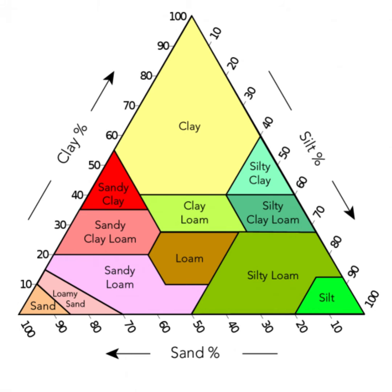Determining soil texture: to determine the soil texture of a sample, the percentage of sand, silt, and clay is measured. A vertical line is drawn from each percentage value on the respective axis to the base of the triangle. The point where the lines intersect within the triangle indicates the soil texture.